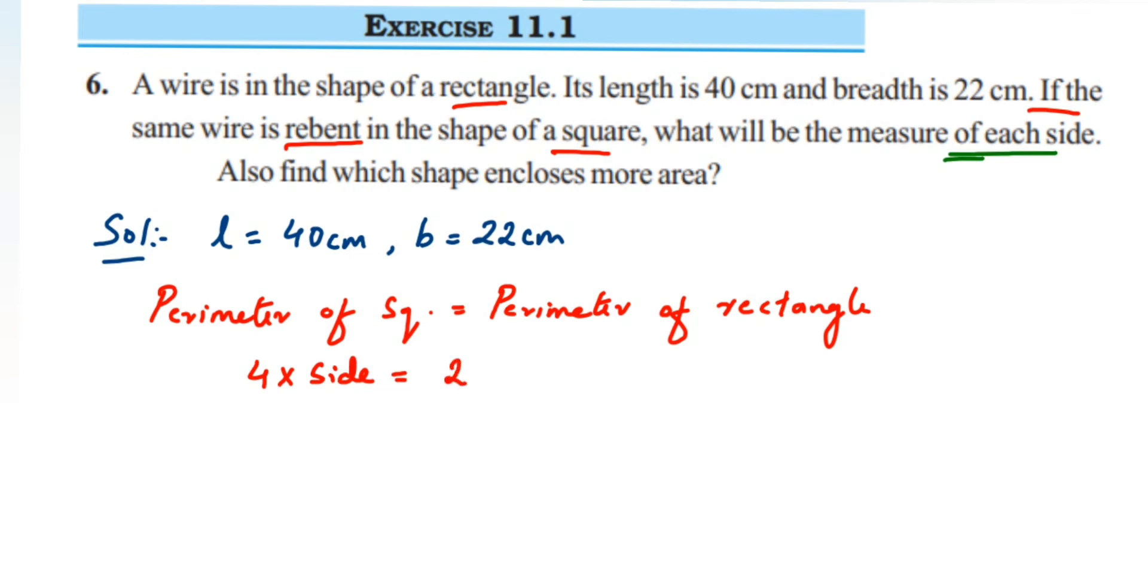Now we're going to substitute what we know. So 4 × side is equal to 2 × (length is 40 and breadth is 22).